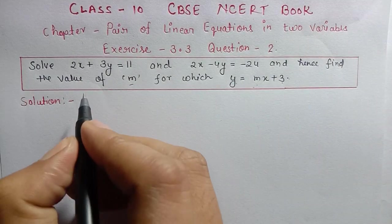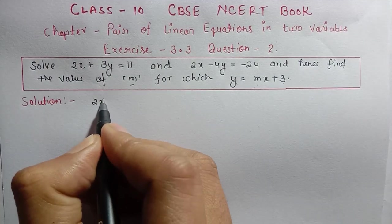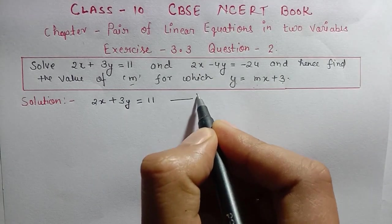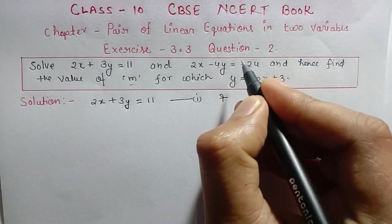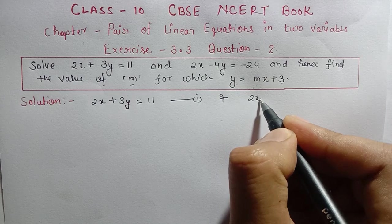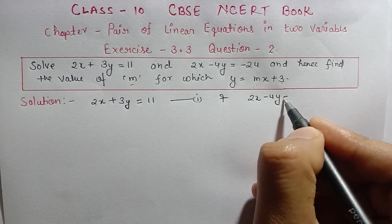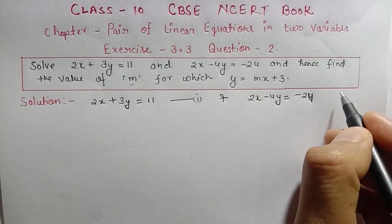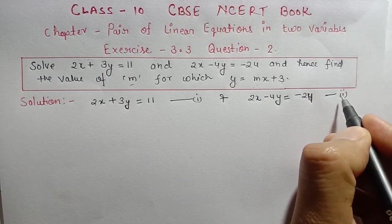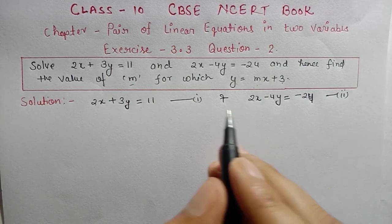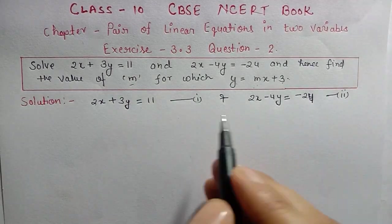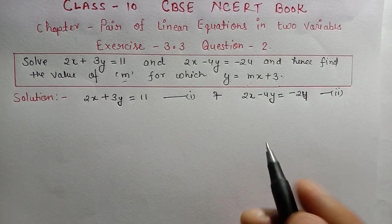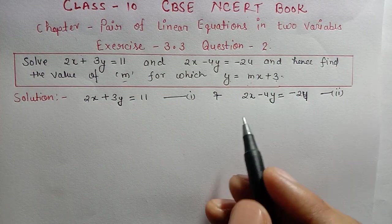Let's note down the given equations. First equation: 2x + 3y = 11 — this is equation number one. Second equation: 2x - 4y = -24 — this is equation number two. We will solve these two equations using the substitution method.